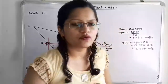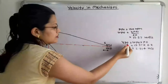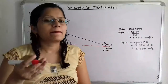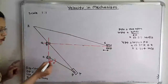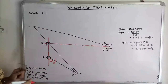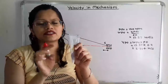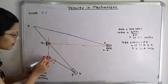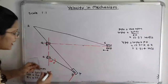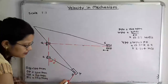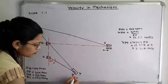Now we determine the direction of velocity VP. The linear velocity is always perpendicular to the link. Since the crank rotates clockwise, the arrow is in the downward direction. I draw a perpendicular line to link OP using a protractor — aligning one edge with OP and drawing along the other edge — and show the arrow in the downward direction. This gives the direction of the velocity of P with respect to O, which we call VP.